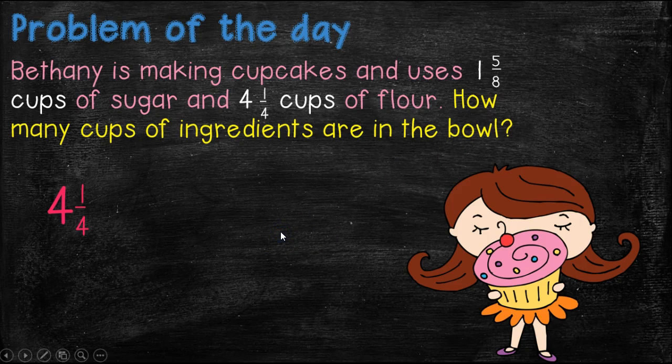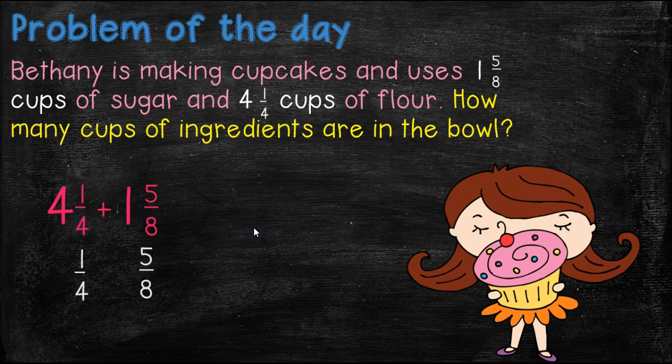So here we have 4 and 1/4 plus 1 and 5/8. But before we can possibly even think about adding these numbers together, we need to make sure that we have equivalent fractions. So let's just pull the fractions down and start there. So the first thing we're going to do is ask ourselves, can we do something to the four to make it an eight? And yes, we can. So what would we do to the four to make it eight?